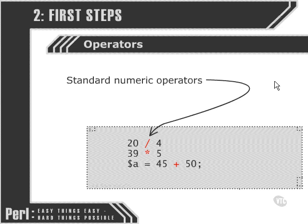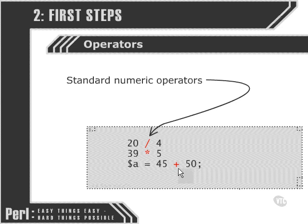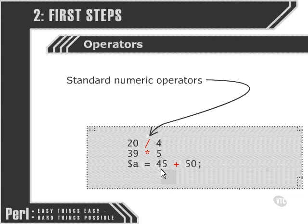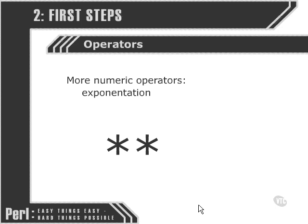What Perl does there is evaluate this half of the expression, which is 45 plus 50, and it takes the number that results and passes that back to a as its value.